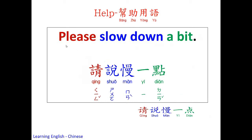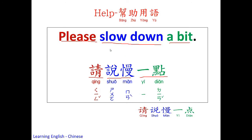Let's see the next sentence: Please slow down a bit. Please — 请. Slow down: 慢慢说 — mān. So in English there's a phrase, slow down a bit.